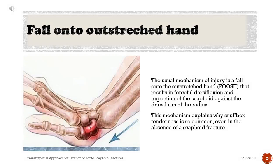The usual mechanism of injury is a fall onto the outstretched hand that results in forceful dorsiflexion and impaction of the scaphoid against the dorsal rim of the radius. This mechanism explains why snuffbox tenderness is so common, even in the absence of a scaphoid fracture.